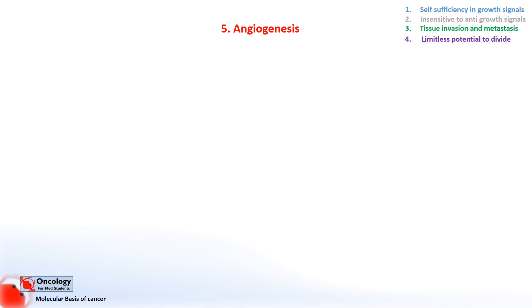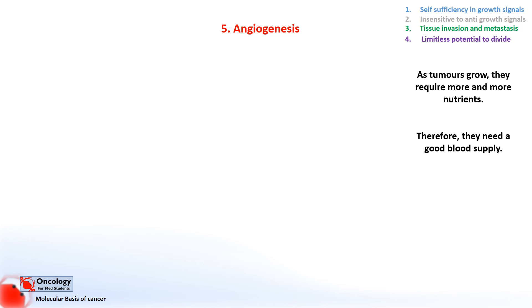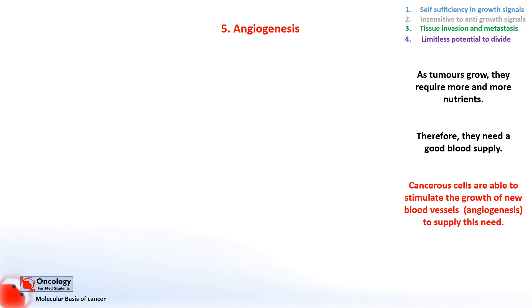The next hallmark is angiogenesis. In any growing organism, as tissues grow and organise themselves they need a steady supply of nutrients. These nutrients are able to diffuse into the tissues but only to a distance of about one millimeter, so when tissues get bigger they need a closer blood supply. This is achieved by a process that stimulates the growth of blood vessels — a process called angiogenesis, with 'angio' meaning blood vessel. This is a normal process in a growing organism, but in an adult it only really occurs at specific times such as in wound healing.